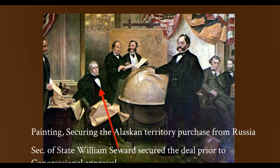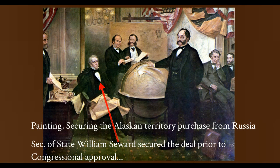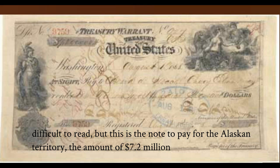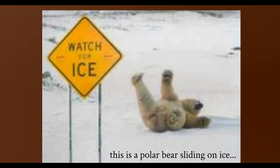This is a painting of the purchase of Alaska. William Seward, the Secretary of State at the time for President Lincoln, actually acted without congressional approval — he was pretty sure they were going to approve the check. Here is also the actual bank note for $7.2 million paid to Russia.